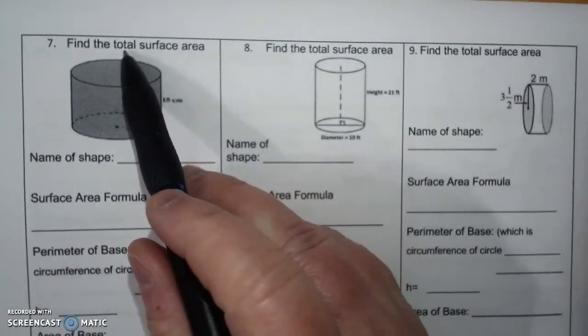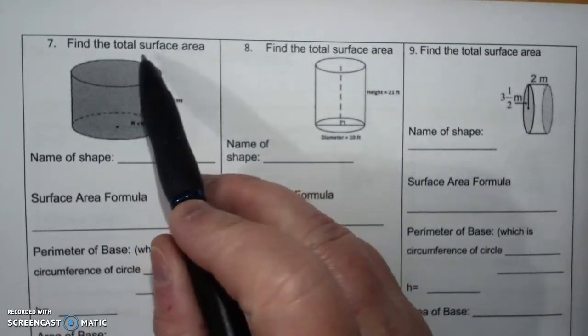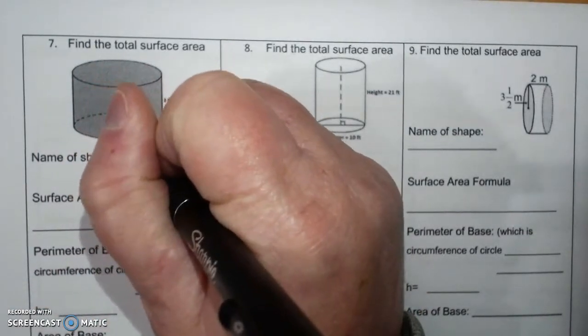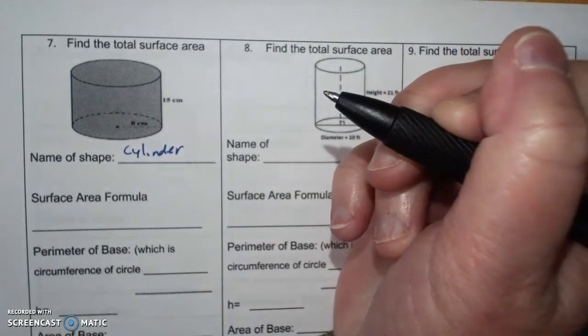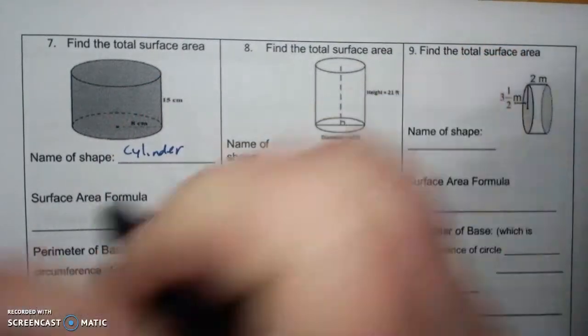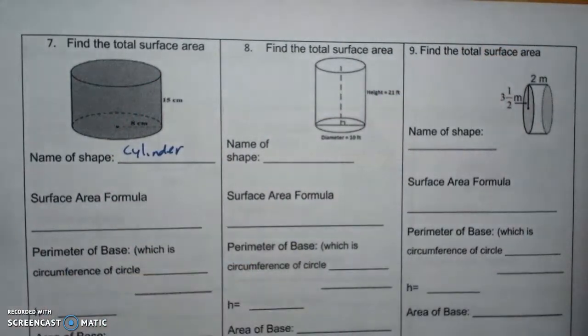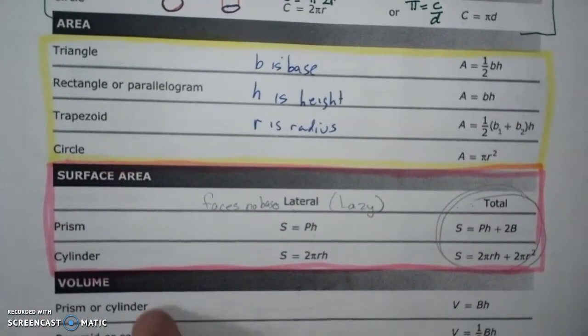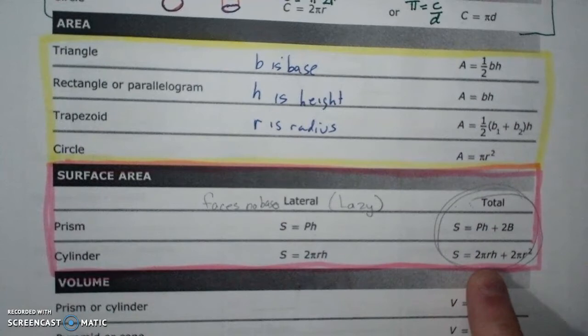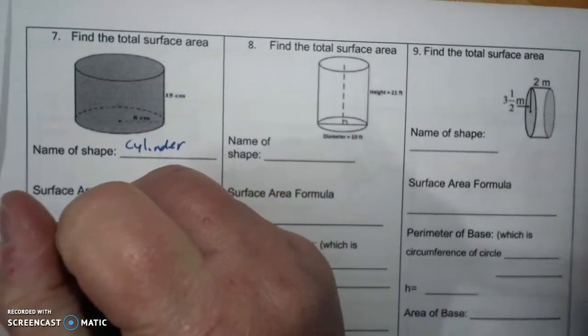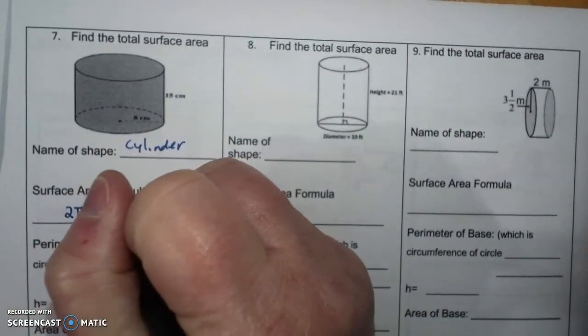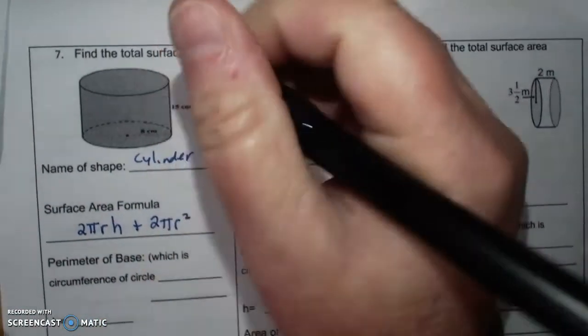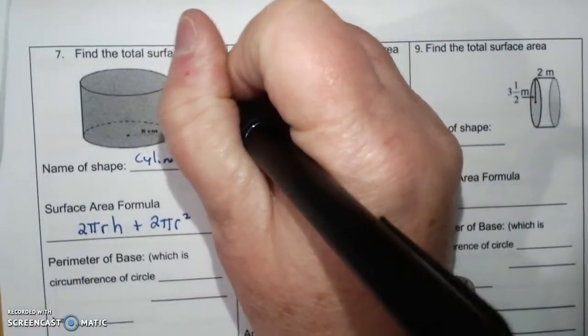So we're doing the problem right here. It says find the total surface area. Name of the shape is a cylinder. And surface area formula, I'm going to come on here and it says surface area of cylinder total is 2πrh plus 2πr squared. I'm going to come up here and r equals 8.